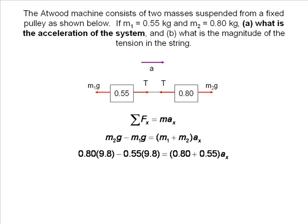We input our values, simplify terms, and divide both sides by the total mass, and we find the acceleration of the system.